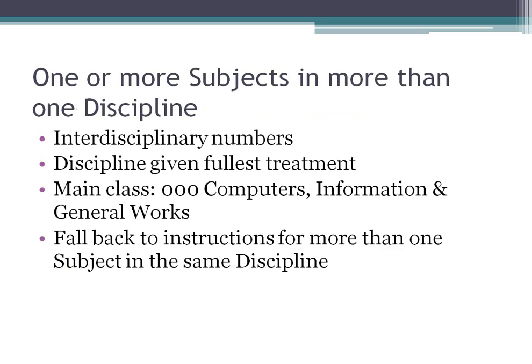As you get familiar with Dewey, you'll see there's often a list of rules you work down — if one doesn't apply, you go to the next. There are about four things to consider when deciding between subjects in more than one discipline: interdisciplinary numbers, the discipline giving fullest treatment, a main class for general works, and as a fallback, the instructions for more than one subject in the same discipline from last week.